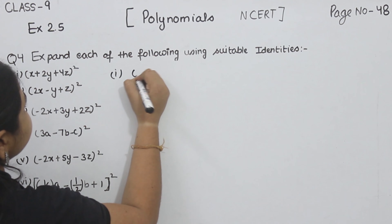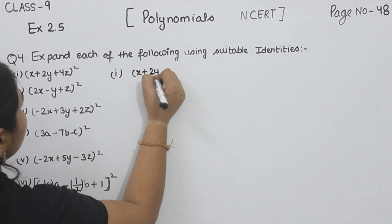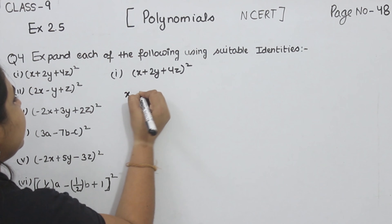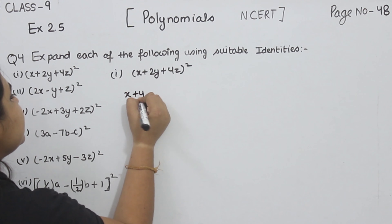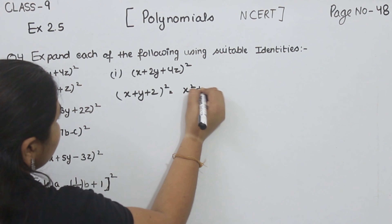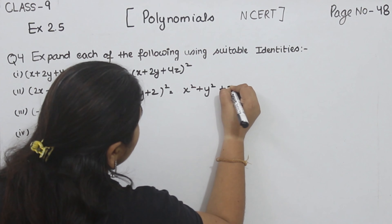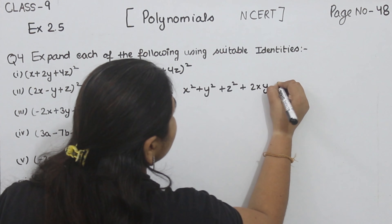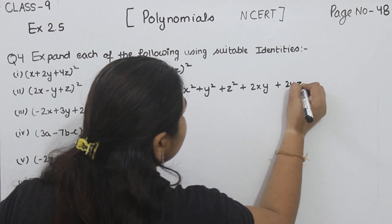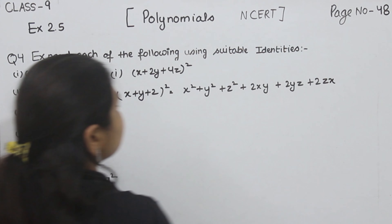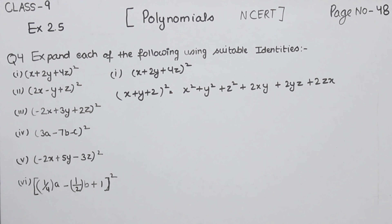Start with part 1: X plus 2Y plus 4Z, whole square. We are going to use the identity X plus Y plus Z whole square is equal to X square plus Y square plus Z square plus 2XY plus 2YZ plus 2ZX. This is the identity we are going to use in the question.